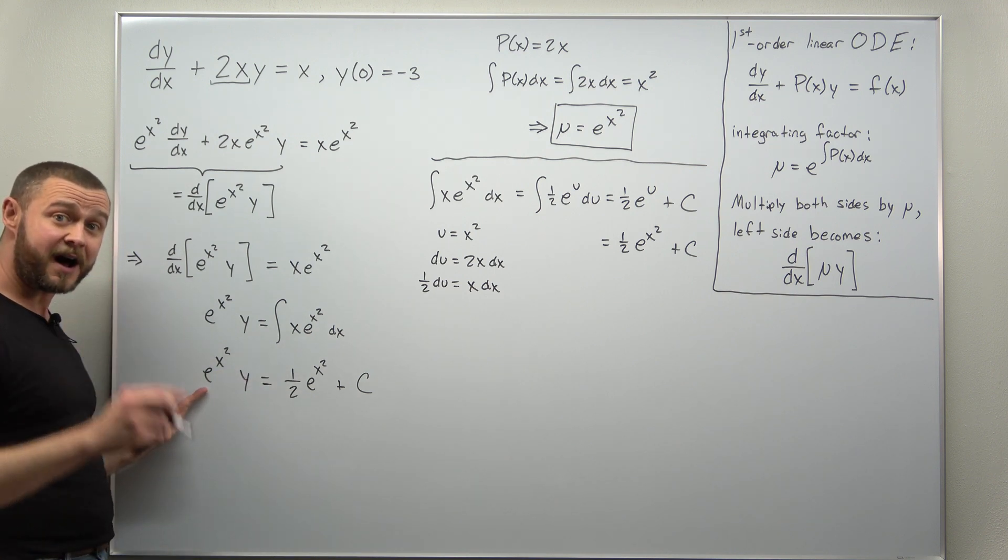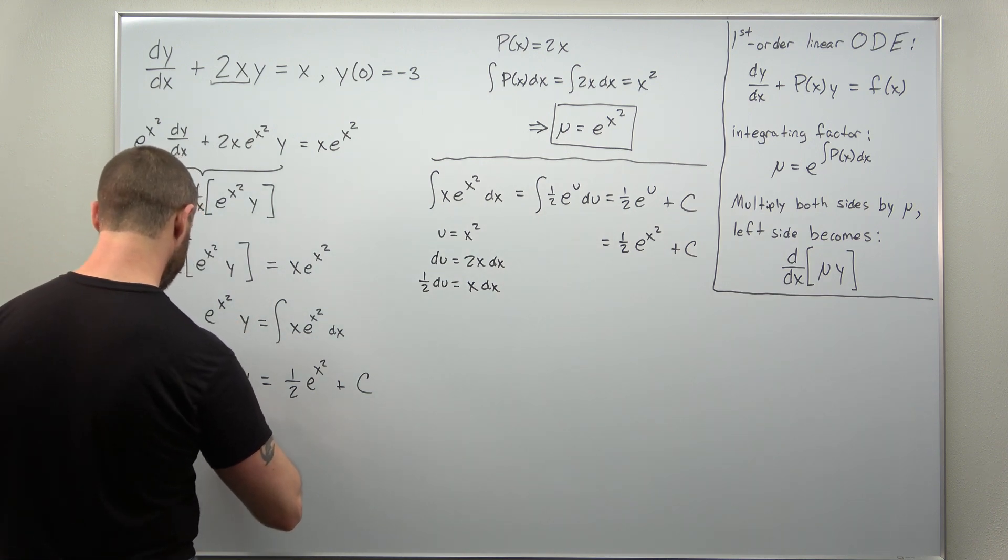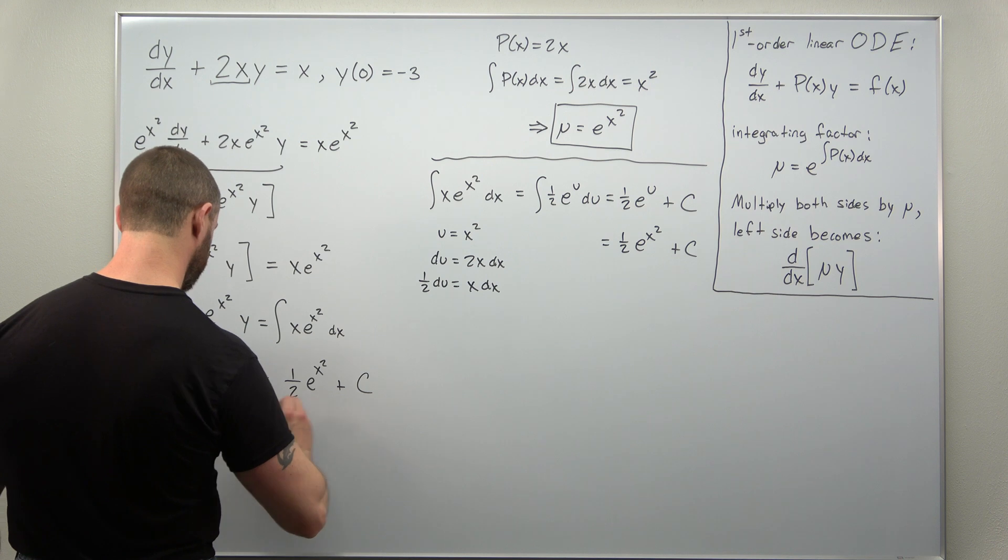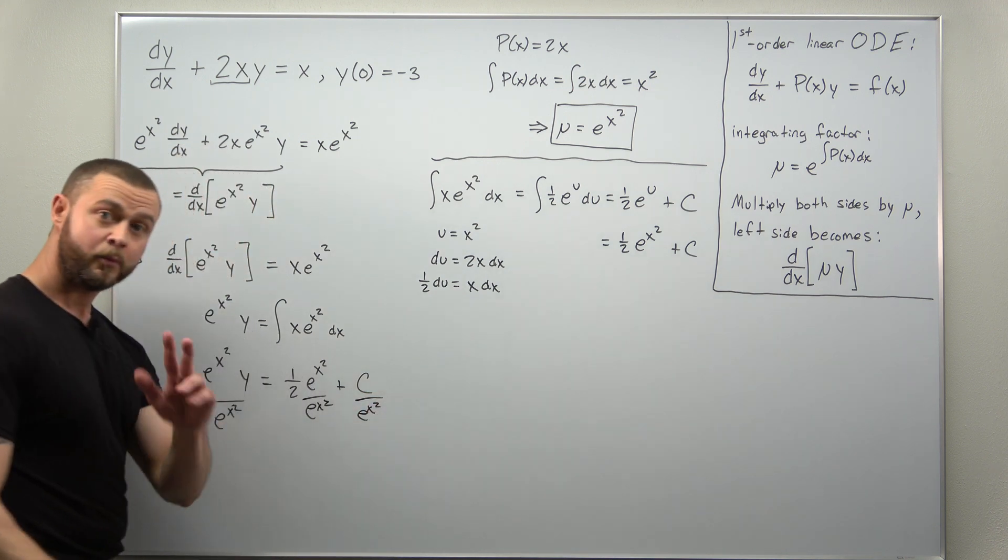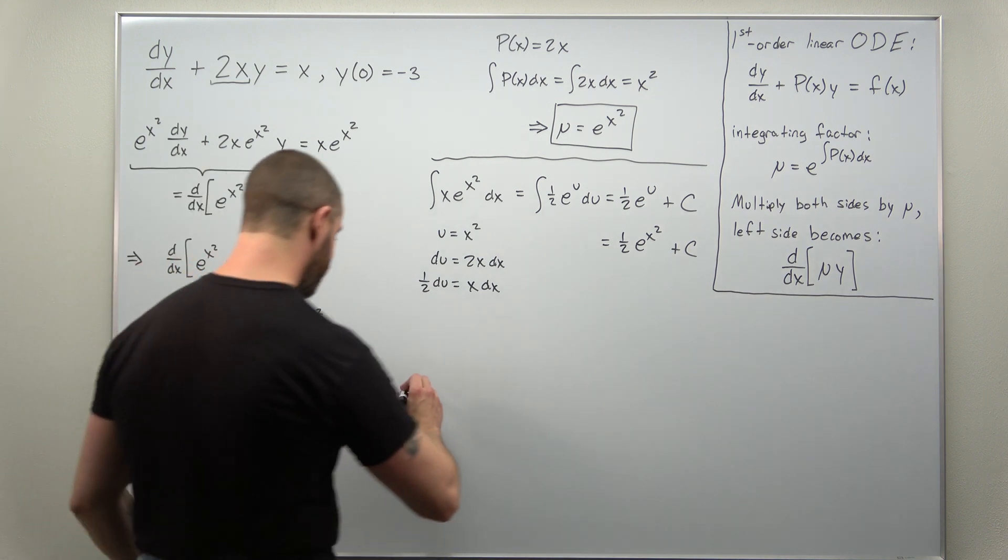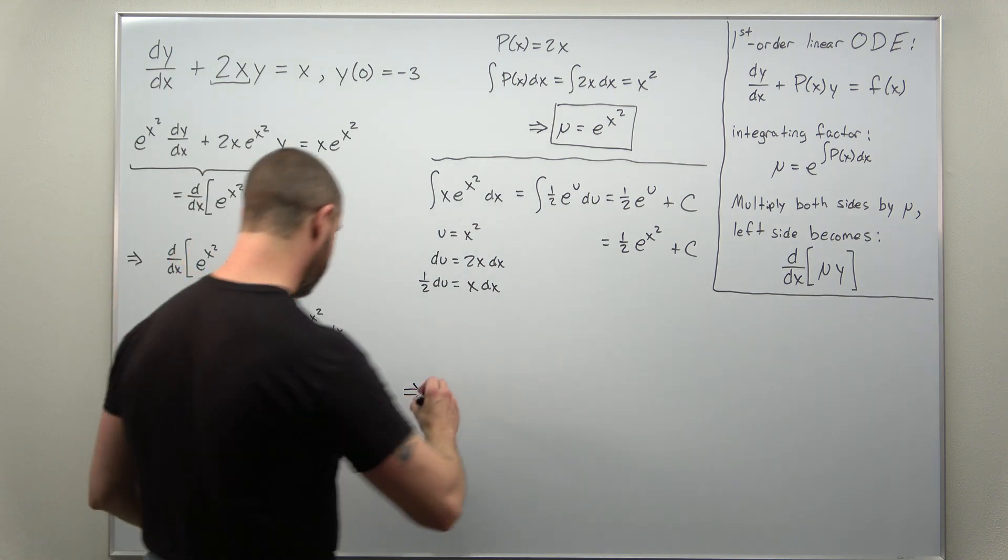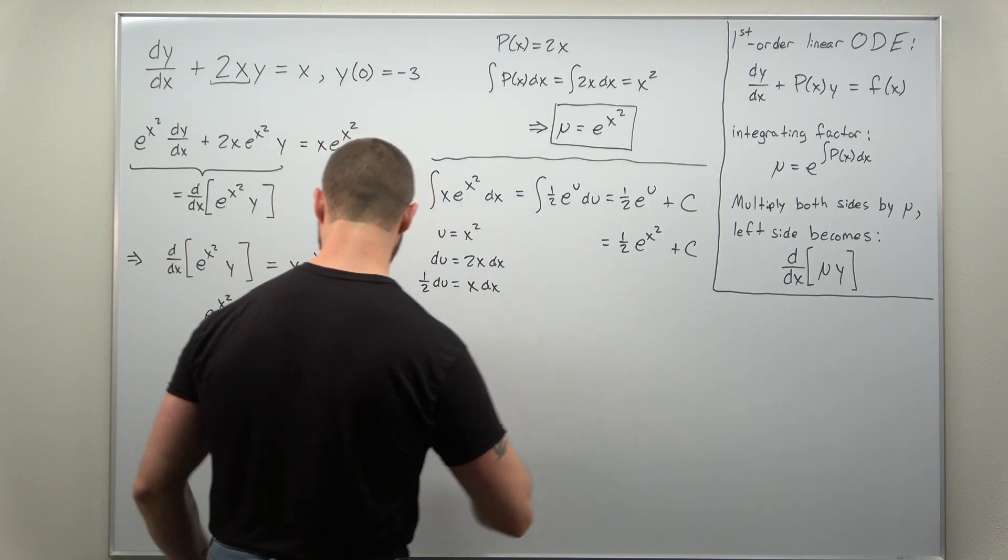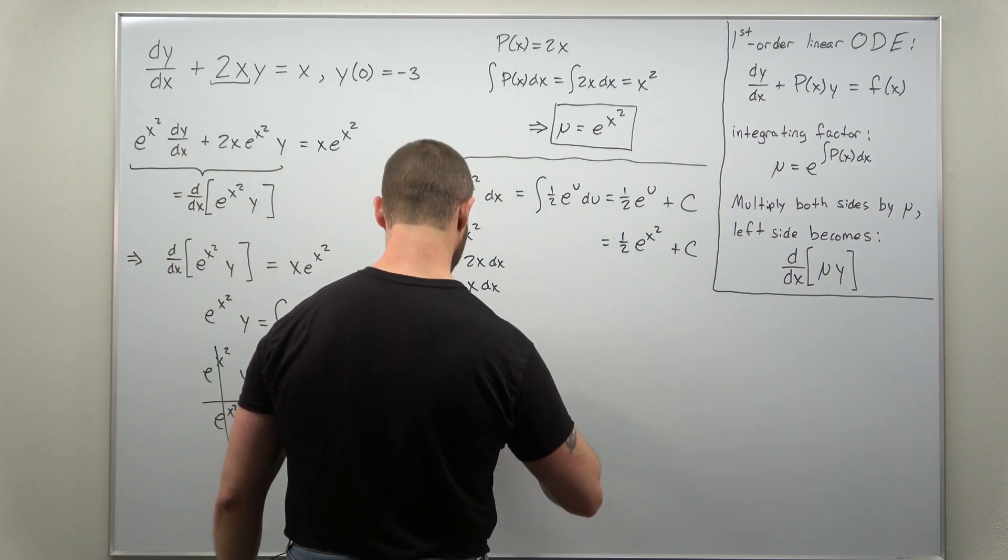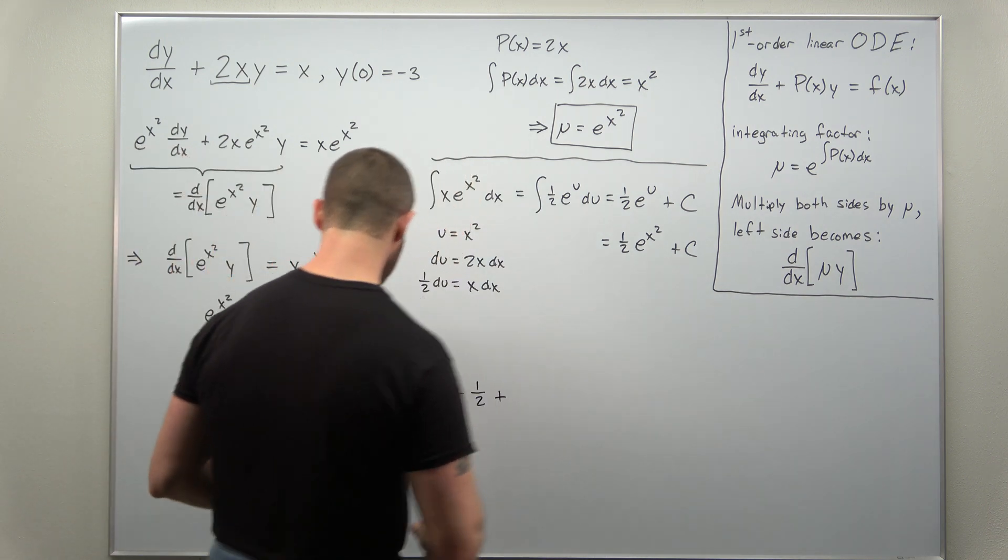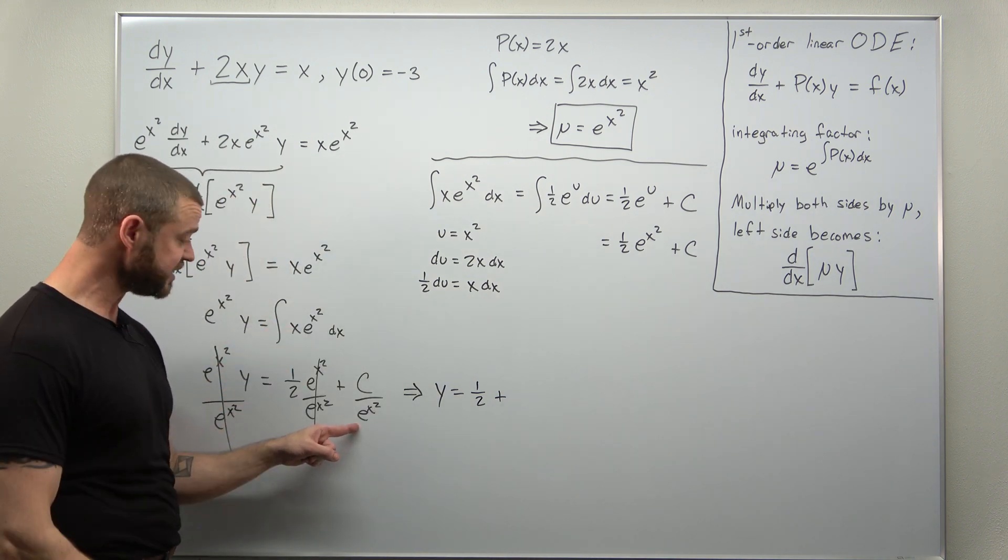Just go ahead and divide by the integrating factor. So if we divide here by e to the x squared, we'll be able to solve for y. And it looks like what we get is y by itself on the left side. The e to the x squared's cancel out there. You're left with a half, and you have your constant, which is why it's important to include the plus c.